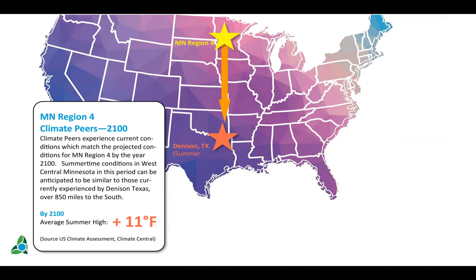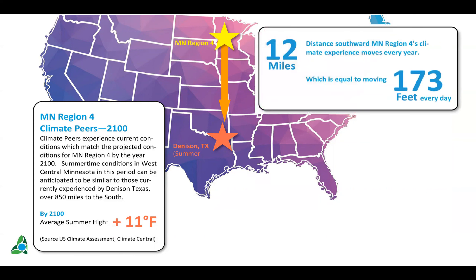As we think about climate change, I think of it as picking communities up and moving them. That's kind of what's happening in terms of our climate. If we think about the projected change by 2100 — average summer highs being roughly 11 or 12 degrees hotter than they are right now — that's similar to summers currently experienced in Northern Texas. That's kind of like picking up Region 4 and moving it south 12 miles every year through the rest of the century, or 173 feet south every day. If we don't abate climate change by the end of the century, it's going to be similar to living in Texas.